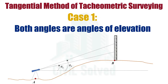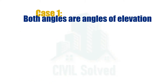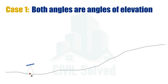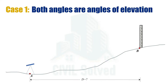Hello everyone. In this video I am going to talk about Case 1 of the tangential method of tacheometric surveying, in which both the angles of target are angles of elevation. Consider a cross-section of land shown in this figure — two points are given as point A and point B. The instrument is placed at one point and the staff is placed at another point, and it is asked to calculate the horizontal distance between them as distance d.